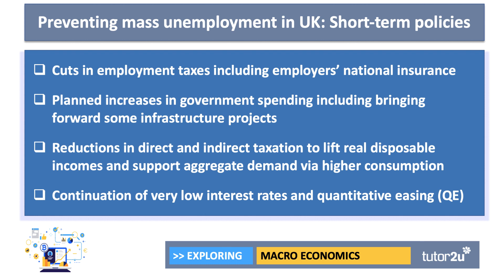What are some of the short-term options? One would be for the government to cut employment taxes — the main one being employer's national insurance contributions. A cut in national insurance would bring down the cost of employing people. The government is also expected to bring forward higher spending on infrastructure projects in areas such as house building, roads, and transport. Other options include cuts in direct and indirect taxation — perhaps an increase in income tax allowances or a cut in VAT to support aggregate demand. On the monetary policy side, very low interest rates are likely to continue, and the Bank of England will be using quantitative easing to inject more money into the banking system.